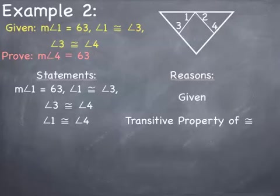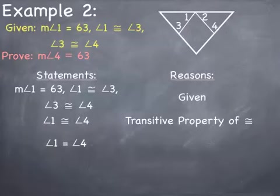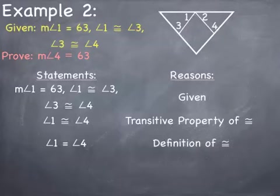Remember, when dealing with numbers and measures we use an equal sign, and when dealing with notation we generally use a congruent sign. Because I'm trying to get the measure of angle 4 equal to 63 — a number — I need angle 1 and angle 4 to be equal to each other. So I'll say the measure of angle 1 equals the measure of angle 4, and that is the definition of congruence: if two angles are congruent to each other, then their measures are equal.